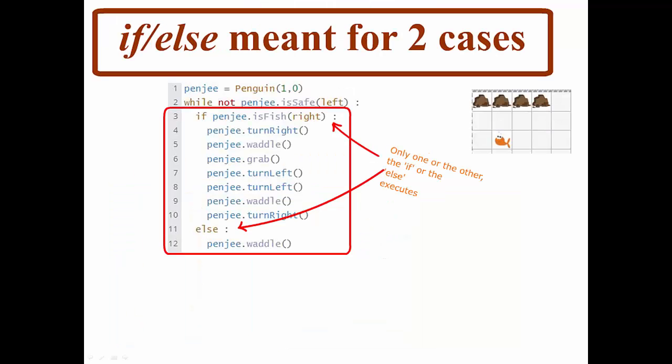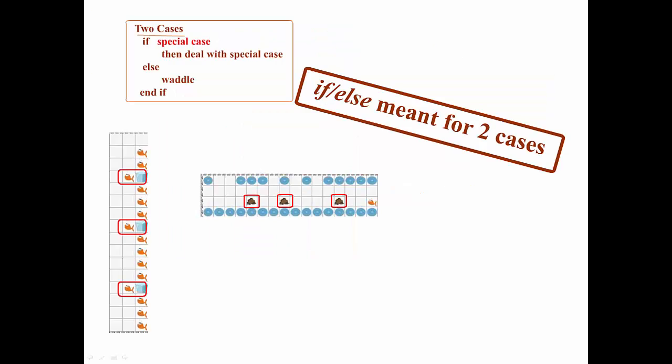IF-ELSE is meant for two cases, and only one or the other, the IF or the ELSE, will execute. Essentially, if a certain special case is true, then we deal with it. If not, we do something else, like waddle.